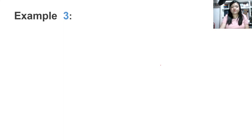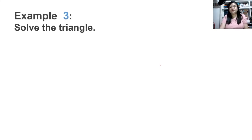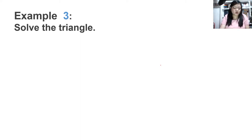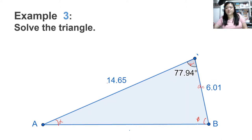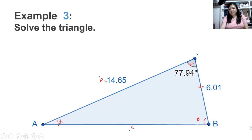For example number 3, let us solve this triangle using the law of cosines. First, let us name our parts. Since this is corner A, we name this angle alpha. Corner B is angle beta, and the third corner is angle gamma. The side opposite alpha is A, the side opposite beta is B, and the side opposite gamma is C. For this triangle, we need to find the measure of C, angle alpha, and angle beta.